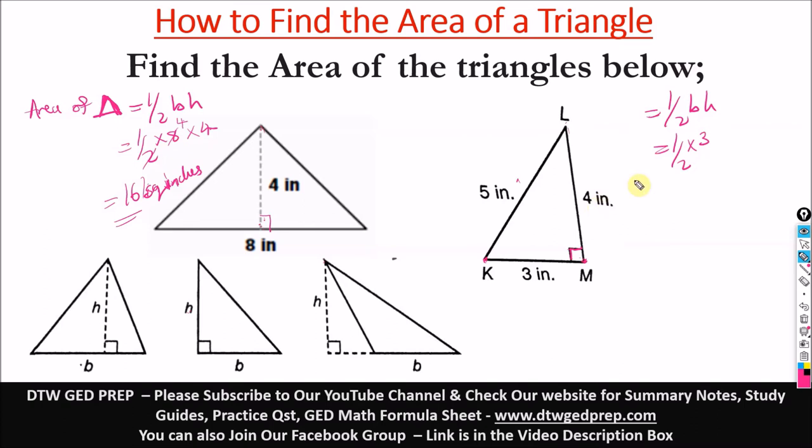So this height here is 4 inches. We can cancel out, this 2 goes into 4 two times, and we're left with 3 times 2, which gives us 6 square inches. This is the area, so it's square inches. You can write it like this or like this.